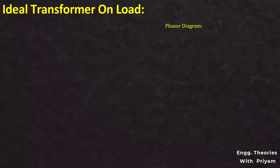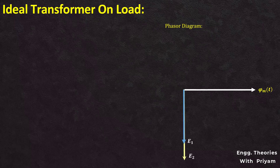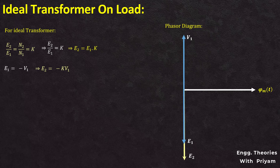Now, let's see the phasor diagram for the ideal transformer in the loaded condition. At first, we take the main flux phi m as reference. Then both the EMFs E1 and E2 are in phase with each other and they both lag the reference flux phi m by an angle of 90 degrees. Both E1 and E2 are anti-phase with the supply alternating voltage V1, or both EMFs are 180 degrees out of phase with V1. This is because the self-induced voltage E1 is equal to minus V1, and the mutually induced voltage E2 is equal to minus K into V1, where K is the voltage transformation ratio. As this is an ideal transformer and there is no loss, the secondary induced voltage equals the voltage across the load, so E2 is equal to V2. The magnetizing current I mu is purely inductive current — it lags the alternating supply voltage V1 by 90 degrees and is very small in magnitude. These aspects remain constant for both the ideal transformer operating without a load and with a load.